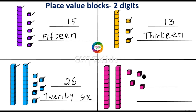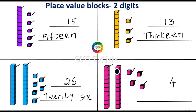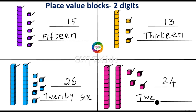Now come to this one. How many one-blocks are here? One, two, three, four — so you have to write four in the ones place. And here how many ten-blocks are there? Two ten-blocks are there, so you have to write two in the tens place. This represents the number 24.